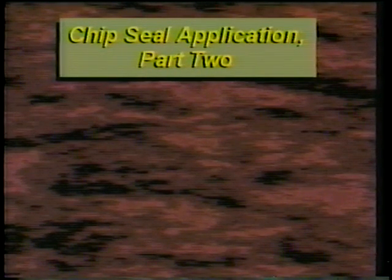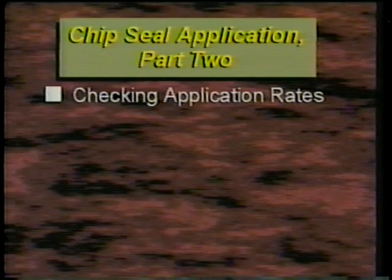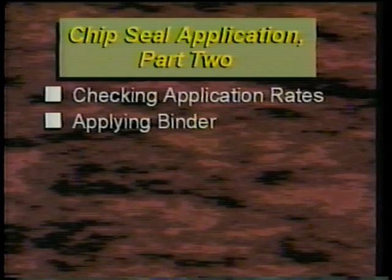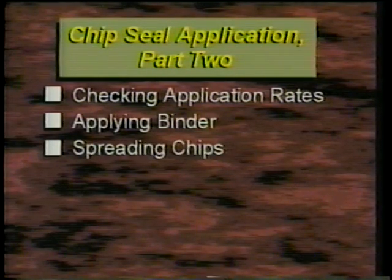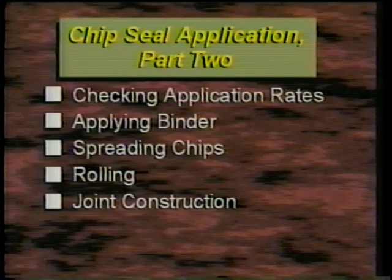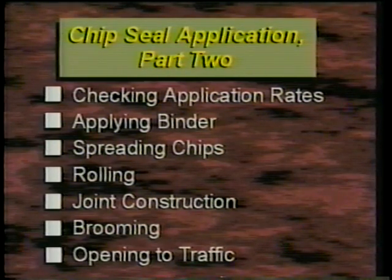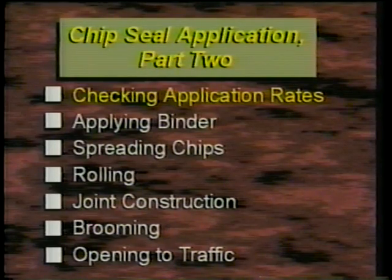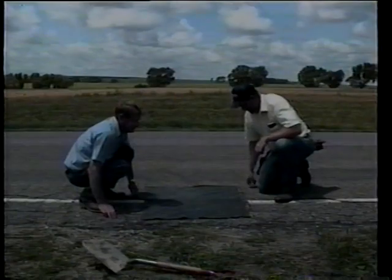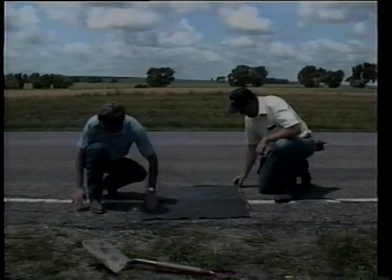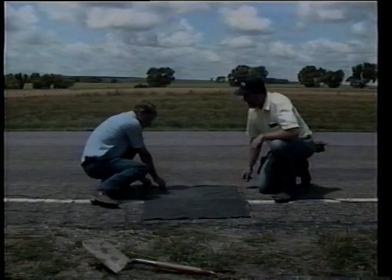Here in part two of chip seal application we'll look at checking application rates, applying binder, spreading chips, rolling, joint construction, brooming, and opening to traffic. Let's start with checking application rates — both the oil and chip application rates should be verified.